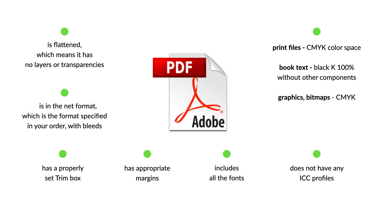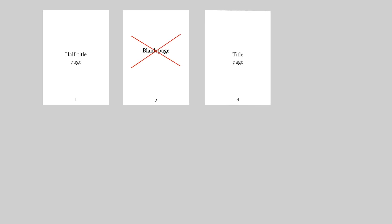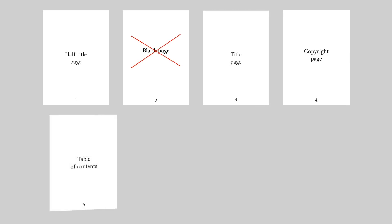Text should be in 100% K black. If your project contains any color photos or graphics, the text must also be made in 100% black, whereas the graphics or bitmaps should use a CMYK buildup. The file must contain all the pages to be printed, ordered in the correct sequence, and including any intentionally blank ones.